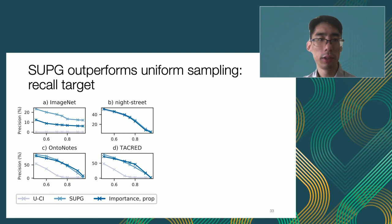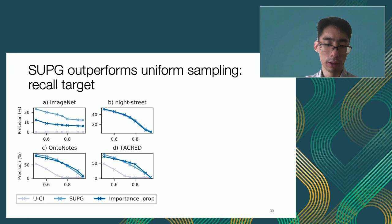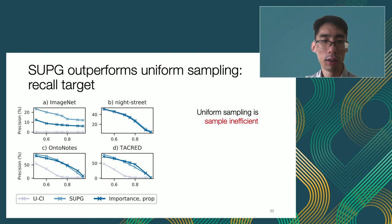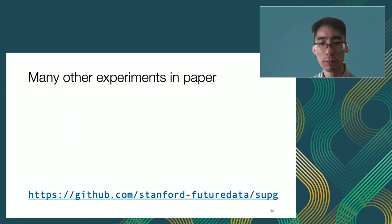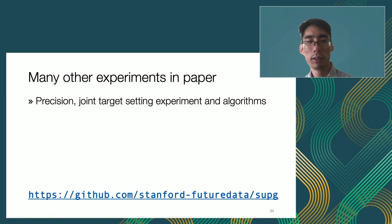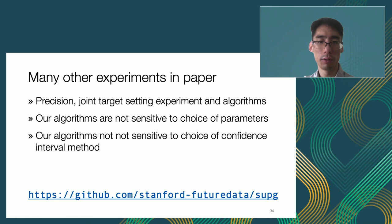We also show that our algorithms outperform uniform sampling on the recall target. For each plot I'm showing precision — which we want to maximize — along with uniform sampling and our algorithms. Uniform sampling is sample inefficient, and our algorithms outperform in all settings, sometimes by up to 10 or 20 times higher precision. There are many other experiments in the paper, and our code is open source. We give algorithms for the precision and joint target settings, and our algorithms are not sensitive to choices of parameters or confidence interval computations.